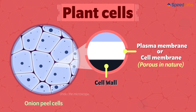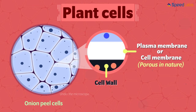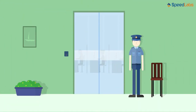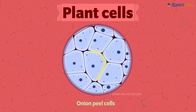The plasma membrane is porous in nature, meaning that any material can move in and out of it. But isn't that dangerous? The simple solution lies in the nature of the plasma membrane — it is selectively permeable. Just like a guard standing at the office door who allows only members with identity cards to enter and exit, the plasma membrane also allows only specific materials to move across. We will look at this in detail in our upcoming videos.